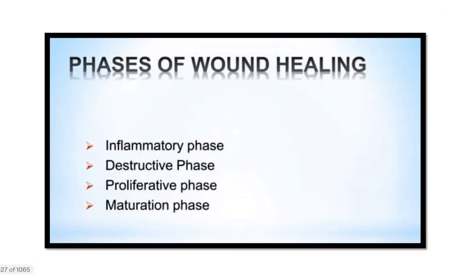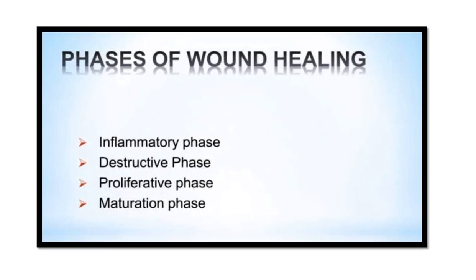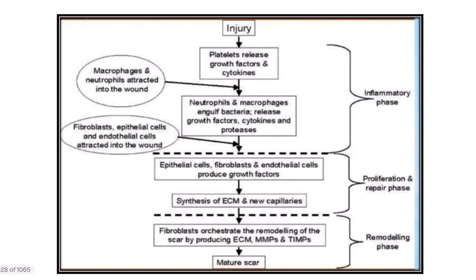First of all, let's look at the phases of wound healing. The first phase is the inflammatory phase, then the destructive and proliferative phase, and the maturation phase — some authors call this the proliferative phase. So three important phases of wound healing: inflammatory phase, proliferative phase, and maturation phase.